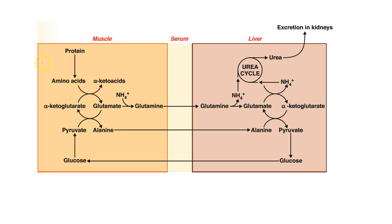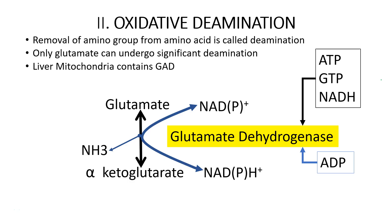To recap: proteins are broken down to form amino acids, and these amino acids concentrate their amino group in the form of glutamate via the transamination reaction, which occurs in the cytosol of all tissues. This glutamate then reaches the liver in the form of glutamine, where glutamine is again converted to glutamate so it can undergo oxidative deamination. Oxidative deamination occurs in the liver mitochondria with the help of enzyme glutamate dehydrogenase, which releases ammonia from glutamate so it can enter the urea cycle.